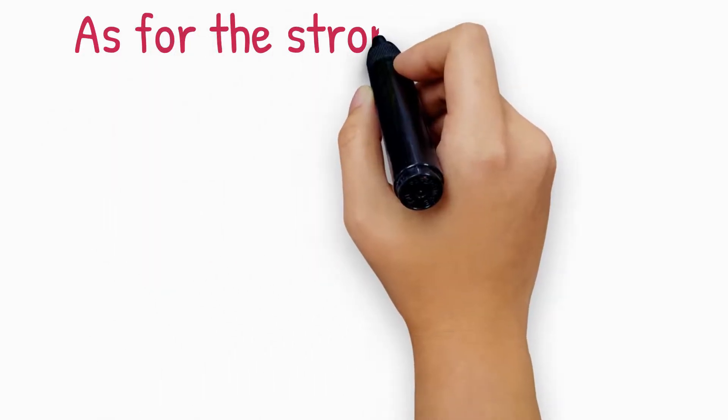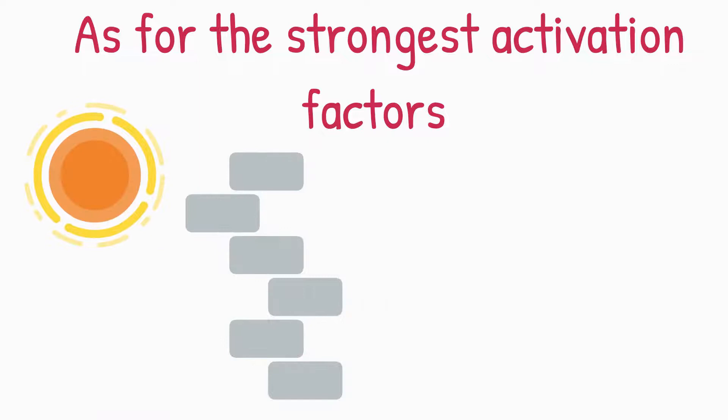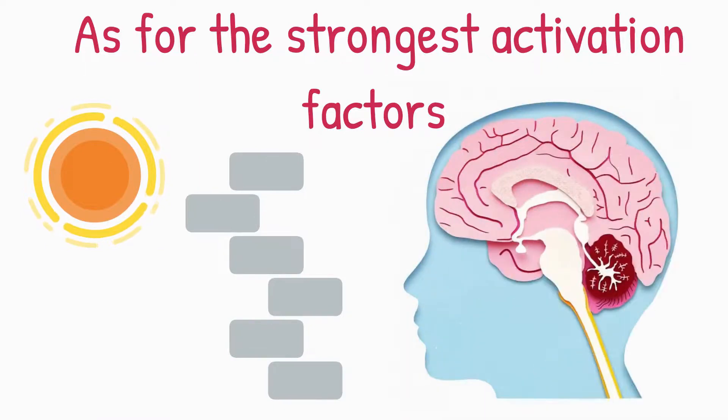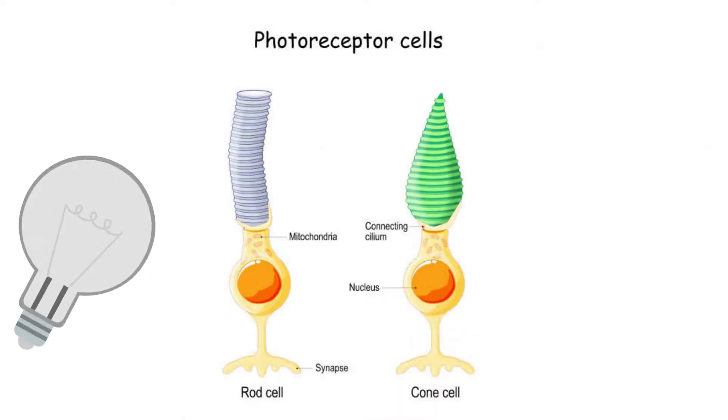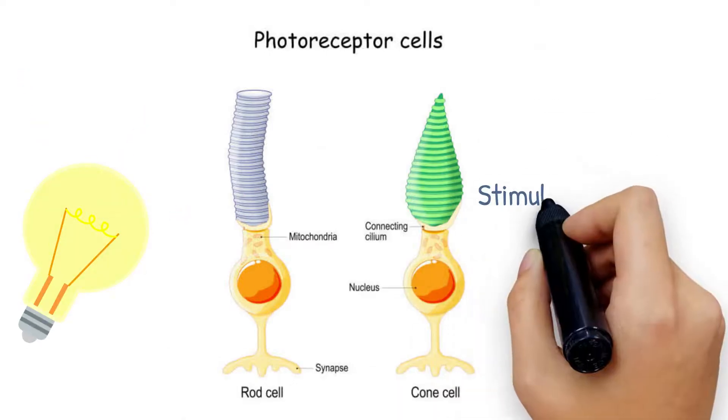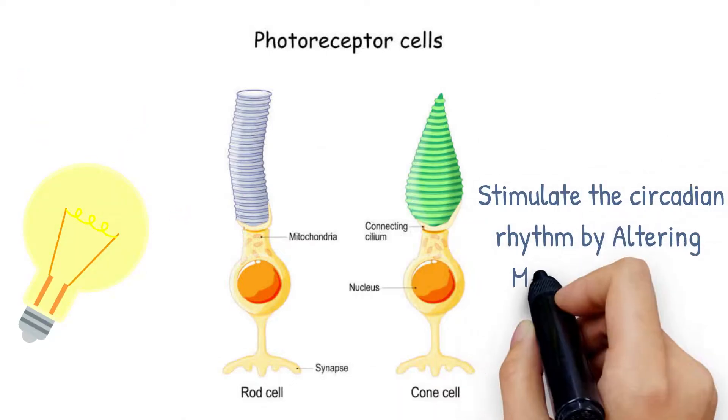As for the strongest activation factors, indirect sun exposure is crucial in activating the functions of the pineal gland. This gland has photoreceptor cells that receive light signals and hence stimulate the circadian rhythm by altering melatonin levels.